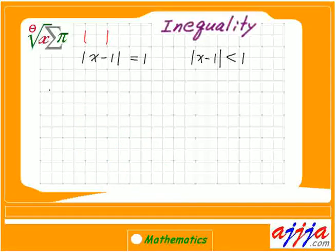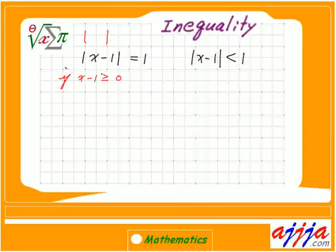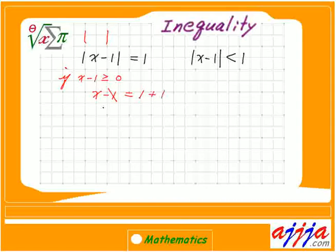So watch carefully. If the whole thing inside, x minus 1, is greater than or equal to 0, then you can solve it directly: x minus 1 equals 1. Move the 1 to the right-hand side — it's going to be 2. So x equals 2.